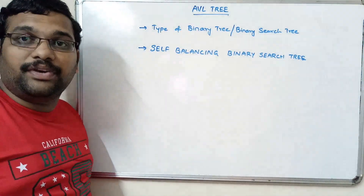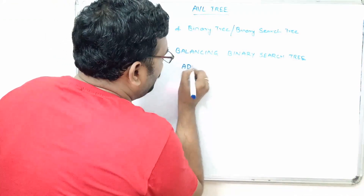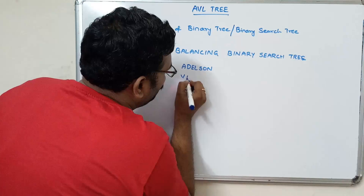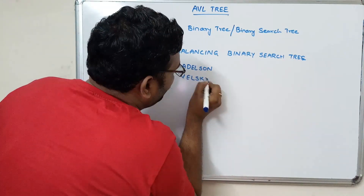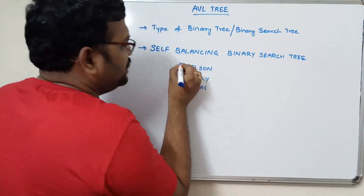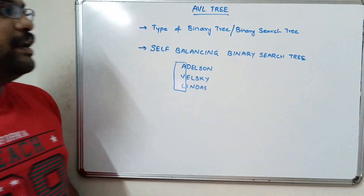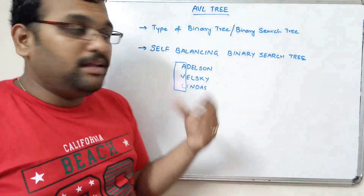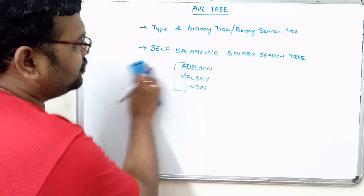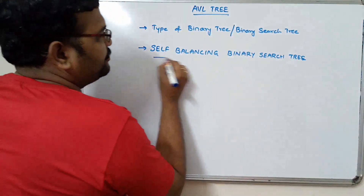The AVL tree was invented by Adelson-Velsky and Landis. These are the persons who invented this self-balancing binary search tree, and that's why it was named as AVL tree.